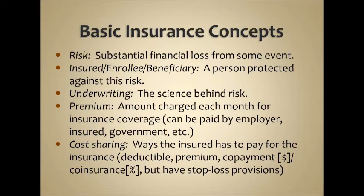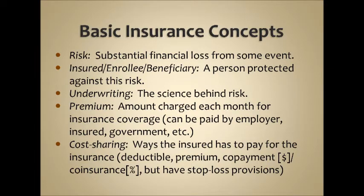If you are called an insured, an enrollee, or a beneficiary, you are all being called the same thing — a person protected against risk. Underwriting is the science behind the risk: how much money should we collect, and how often is a catastrophe predicted to happen? We want to protect everybody in the pool without wasting money or running short. The premium — the amount charged each month for insurance coverage — is the result of what underwriting comes up with as the right price. It could be paid by an employer, by the insured, or by the government. Cost sharing includes premiums, deductibles, and copayments, and stop-loss provisions ensure that at a certain point you don't have to pay more in a given year.